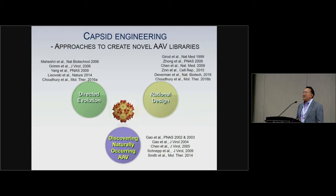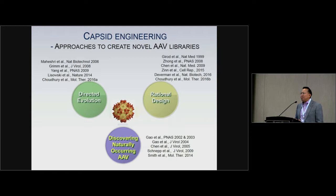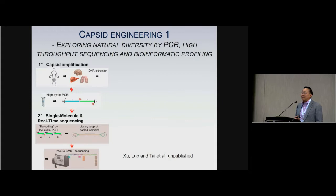In terms of capsid engineering — the topic here is the ABCs and the library of AAVs — over the past 20 years we have different strategies for making AAVs. The first is directed evolution, pioneered by David Schaffer, with many labs now generating beautiful libraries. The second is rational design. A more recent approach is from Luke Vandenberghe's lab, using phylogenetic analysis and bioinformatics to generate designer ancestral sequences. And the old-time approach is looking for natural resources and natural diversity, as my lab and Phil Johnson's lab have done.